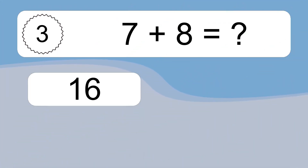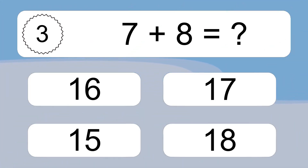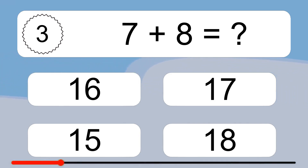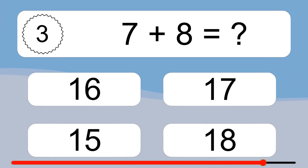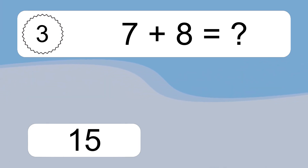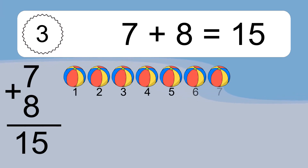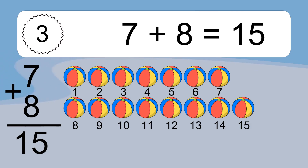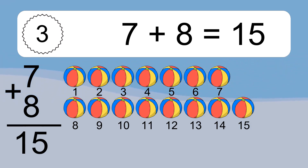7 plus 8 equals what? 7 plus 8 equals 15. Let's count it. 1, 2, 3, 4, 5, 6, 7, 8, 9, 10, 11, 12, 13, 14, 15.